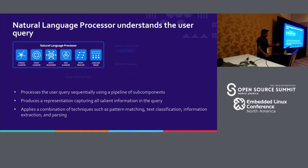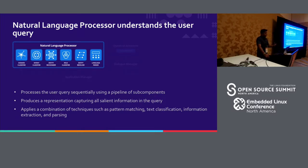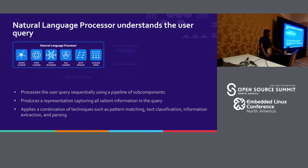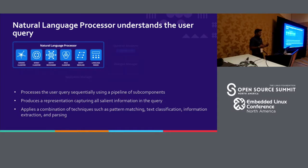Let's talk about the first component: the natural language processor. This contains a sequence of sub-components used to infer the meaning of a user's query, and it produces a representation that captures all the salient information within a query. It applies a combination of techniques involving pattern matching, text classification, information retrieval, and parsing. What we generally found is that just using an end-to-end deep learning platform is not really effective for a production-level application — you need a combination of pattern matching, including regex, as well as machine learning to handle edge cases.